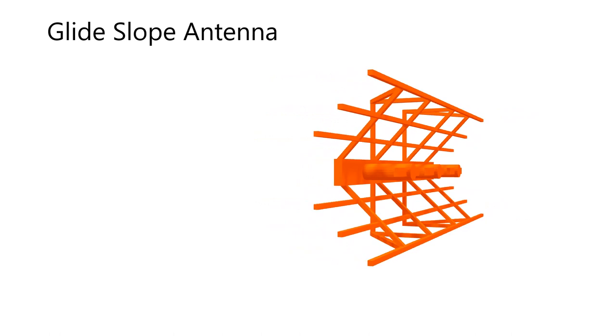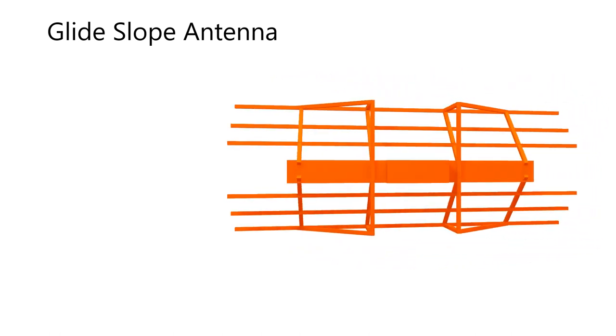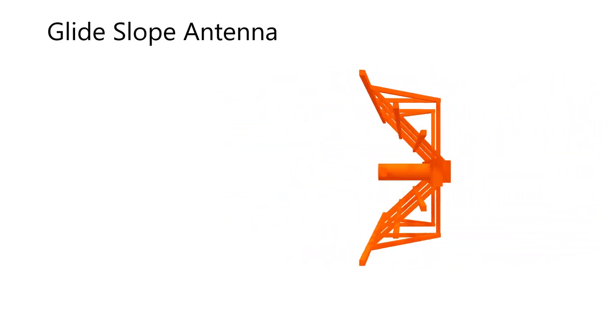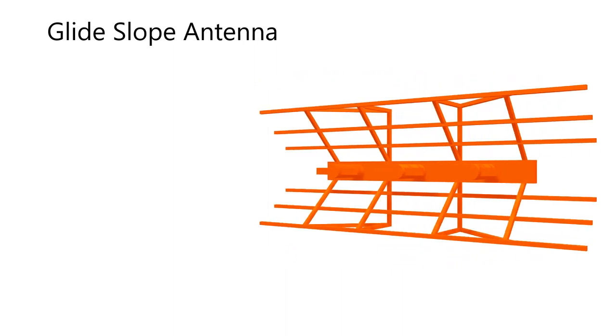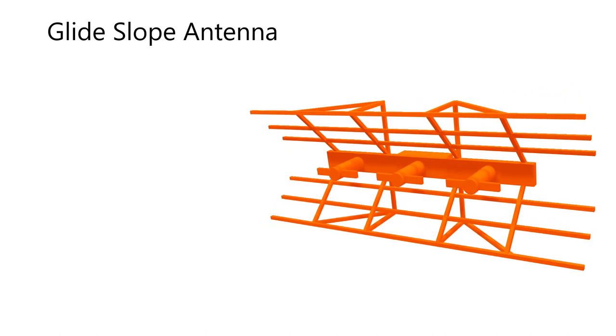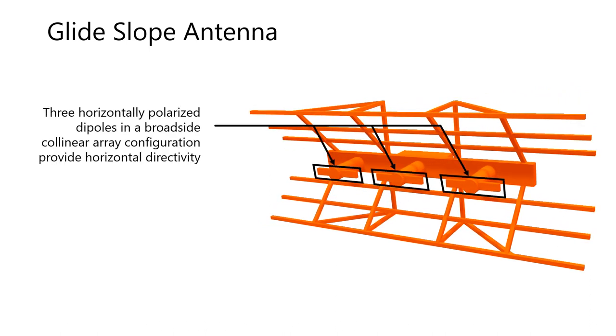In the introductory examples, we used a theoretical point source antenna that radiated equally in all directions. However, image array glide slope antennas are highly directional. Let's identify some of their design components. The first of which are the radiating elements, which consist of three horizontally polarized dipoles in a broadside collinear array configuration, which provide horizontal directivity.